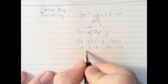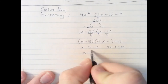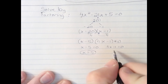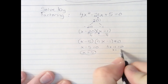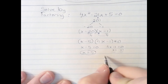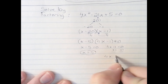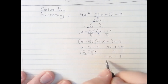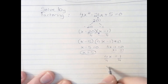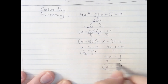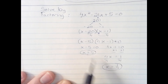On this side, all I have to do is add 5 to both sides and x equals 5 — that's one of my two answers. Here, I'm going to add 1 to both sides to get 4x equals 1, then divide both sides by 4. So x equals 1 fourth. My two solutions are x equals 5 and x equals 1 fourth.